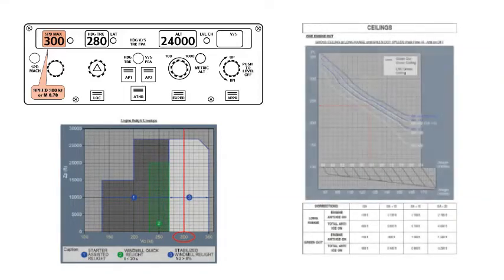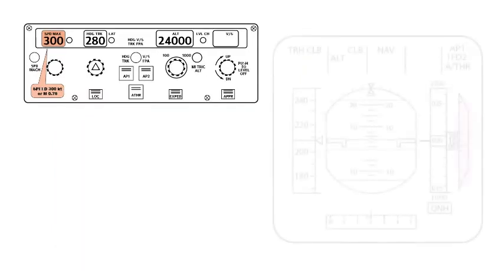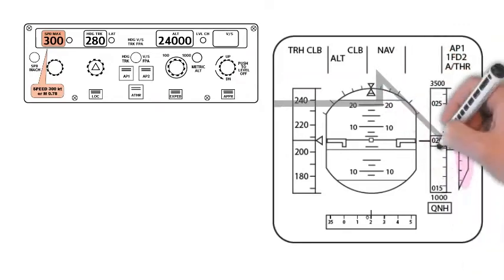One engine out grows ceiling at long-range speed is also available in the QRH in case of double flight management (FM) failure. When the vertical speed (Vs) becomes less than 500 feet per minute.